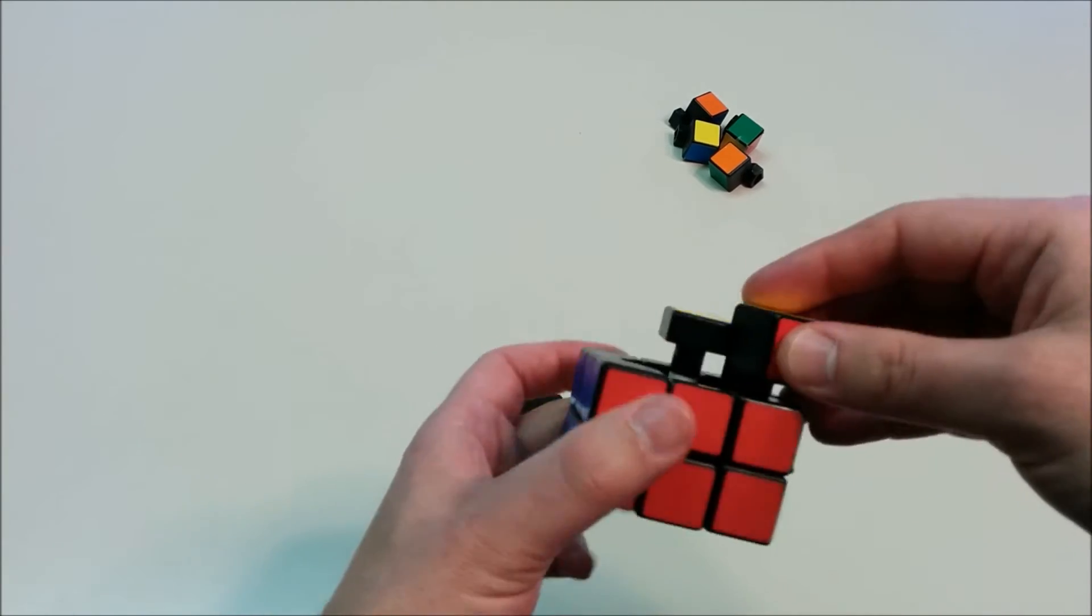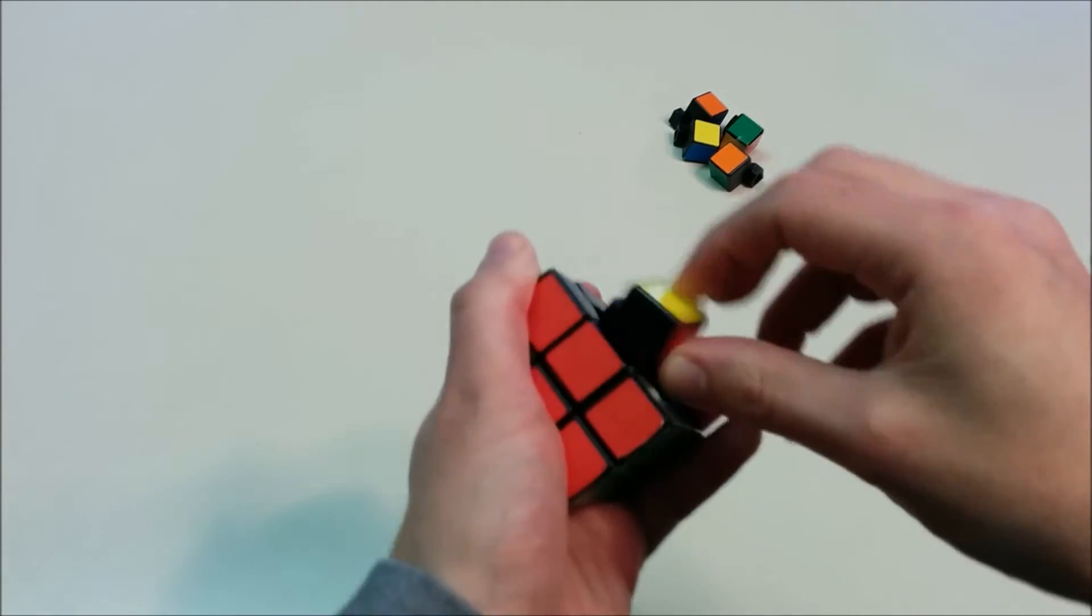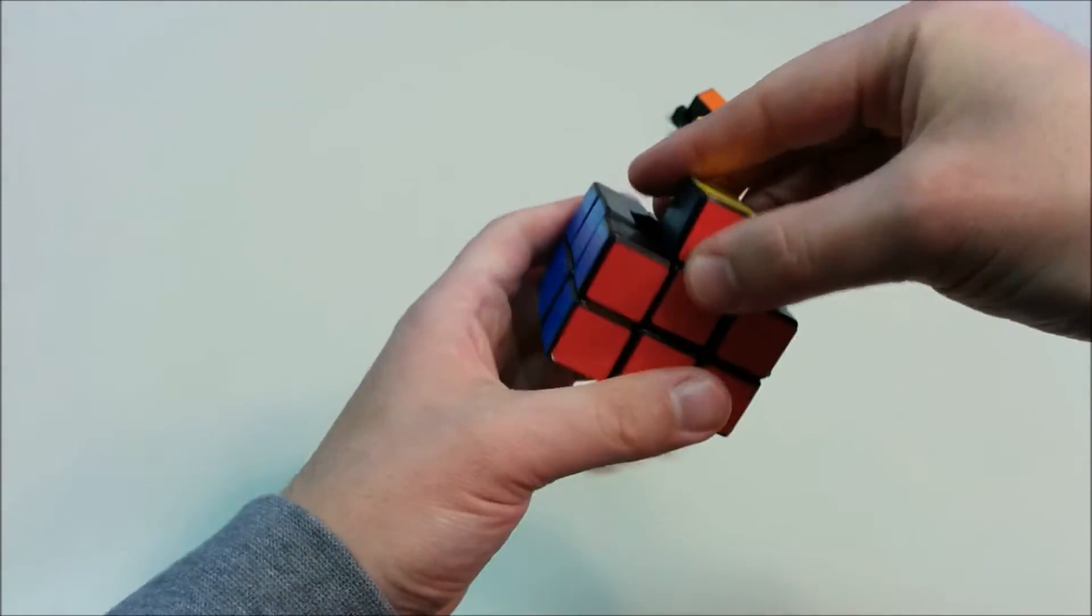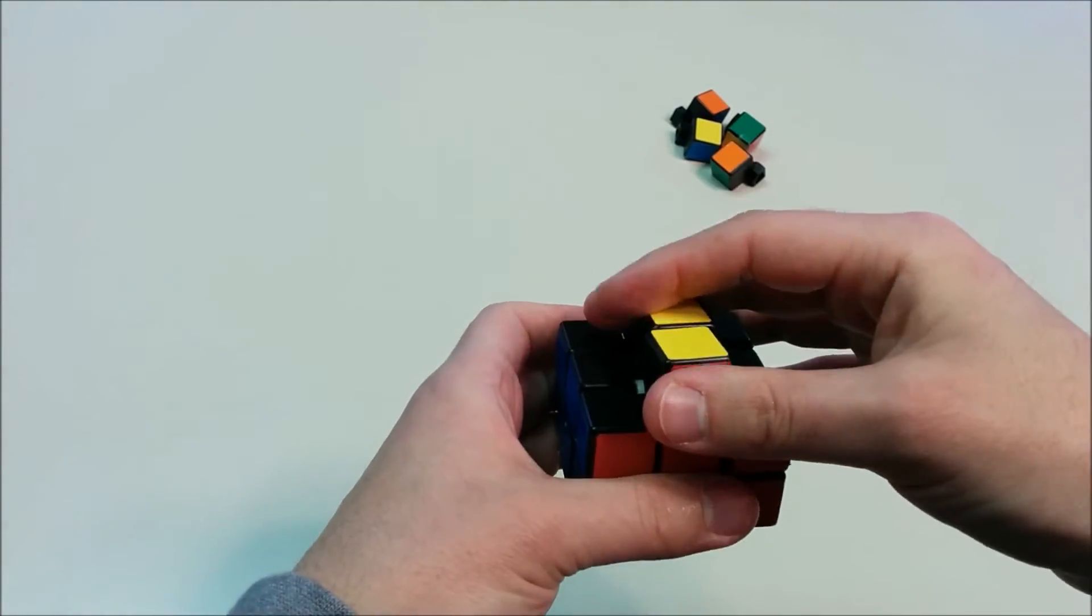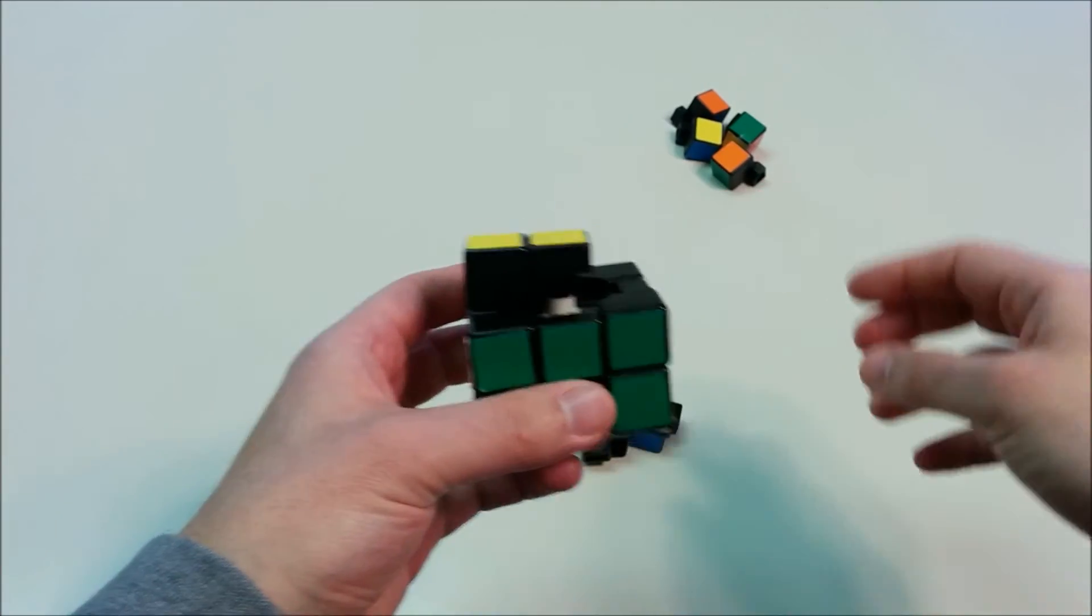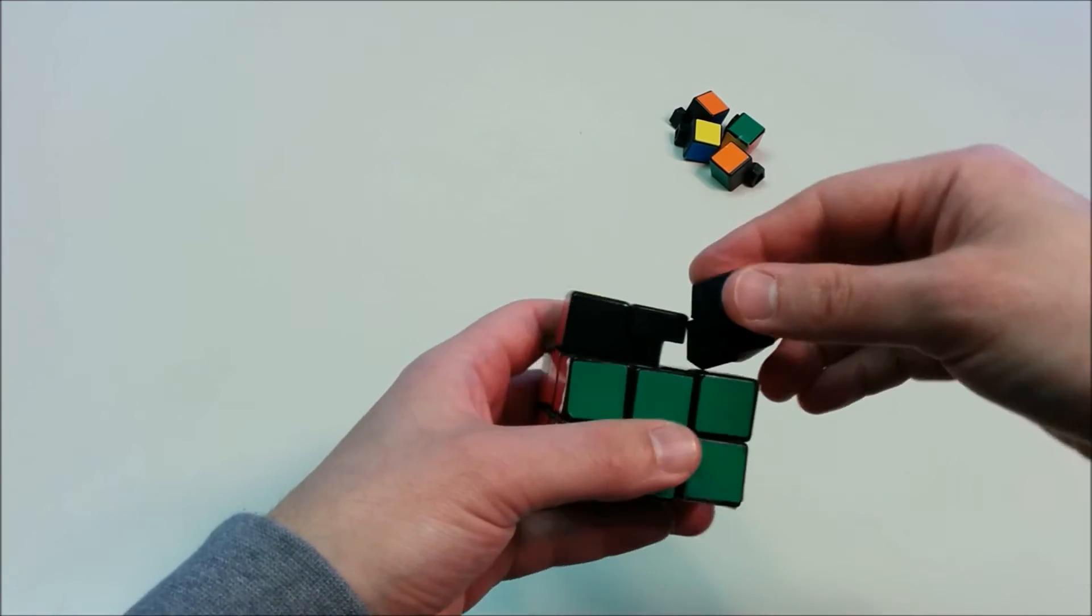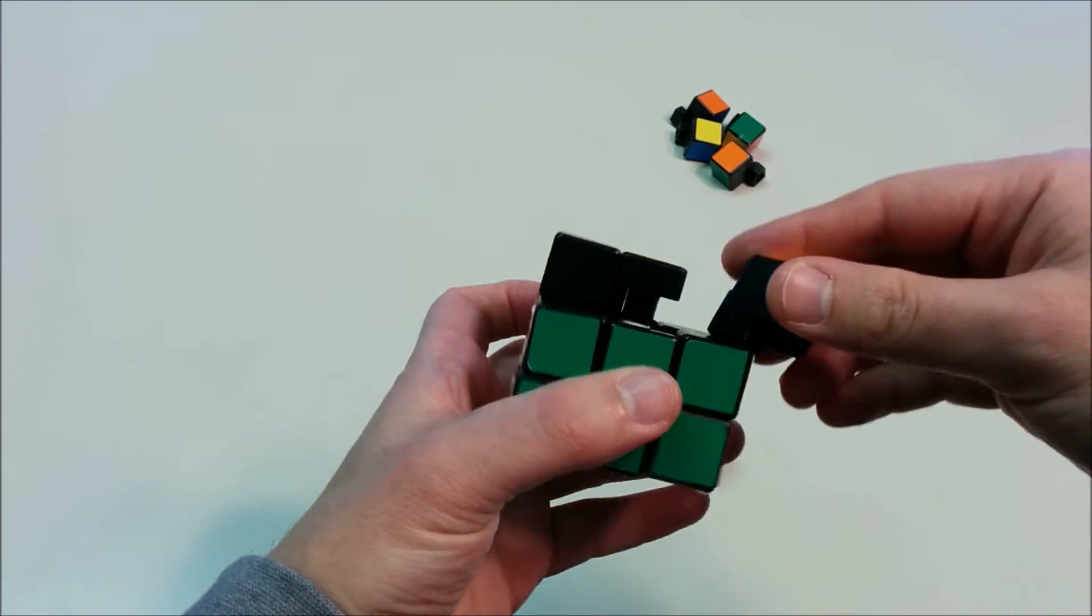So we'll go ahead and match the edge pieces, which have yellow on one side, and match it to the color of the other side.